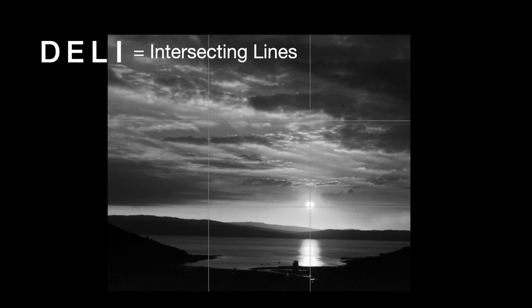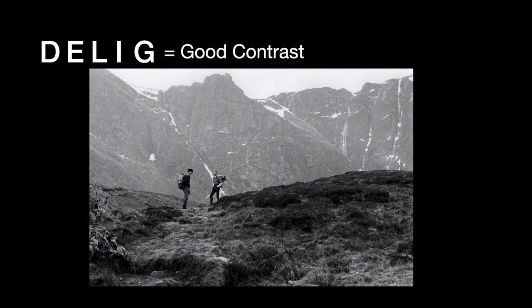G is for good contrast — and that doesn't just mean good contrast throughout the whole photograph. It means good contrast around your subject. Here my subjects are two mountaineers on top of a mountain in the Cairngorms, and I've placed them against a lighter background so they really stand out. If those mountaineers had been lower down among the grass and heather they wouldn't have stood out at all. So G means good contrast around your subject — if you can get it, try it.